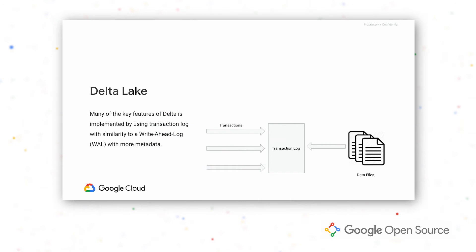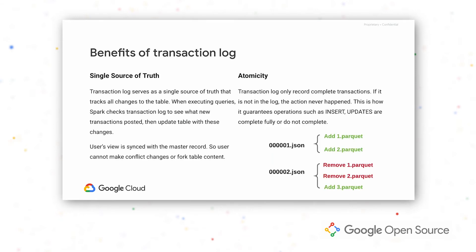Let's take a look at Delta Lake and how it achieves these characteristics. Delta Lake uses a transaction log — similar to write-ahead logs — where all change operations are queued and written to the log first. This gives a couple of benefits: the log becomes the single source of truth, so all views derived from it are consistent and users won't get a fork of content. It also guarantees atomicity, so insert and update operations are either complete or not complete — there's no intermediate unknown state.